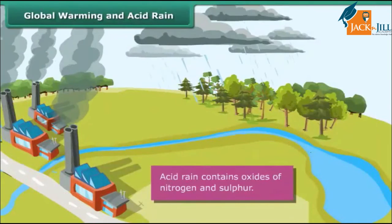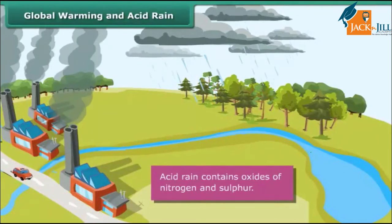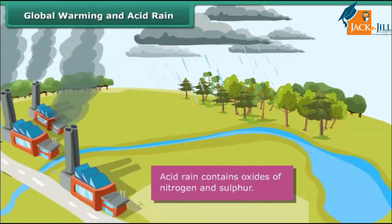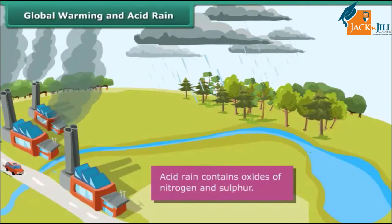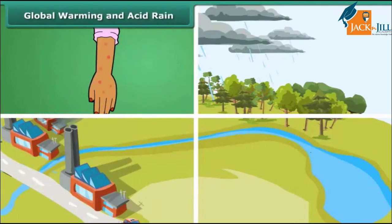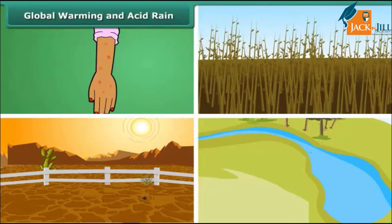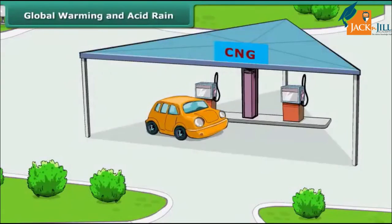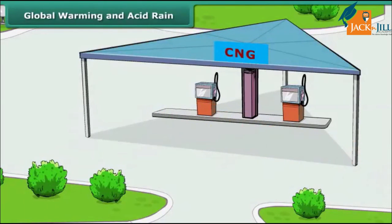Another harmful effect of air pollution is acid rain. Rain water that contains oxides of sulfur and nitrogen released from industries and petrol engines in dissolved state may cause huge damage to skin, soil, standing crops, and buildings. There are ways we can reduce the negative impact on the environment by choosing the right fuel.